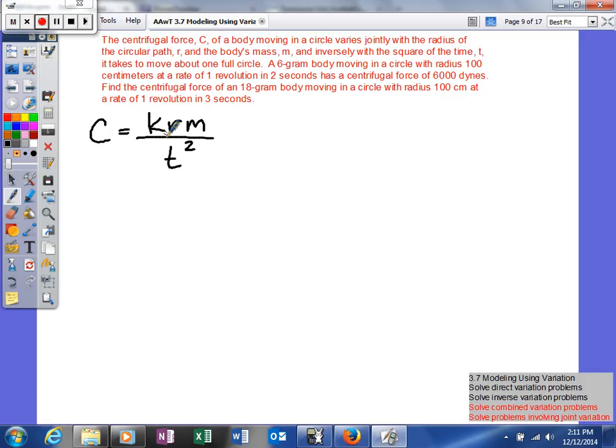Alright, here's our formula. Now we're going to plug all these values in and find K. It says a 6 gram body, so that's our mass - 6 grams - moving in a circle with radius 100 centimeters at a rate of 1 revolution in 2 seconds. So 2 seconds is our time. It has a centrifugal force of 6,000 dynes.